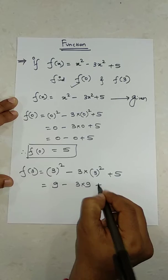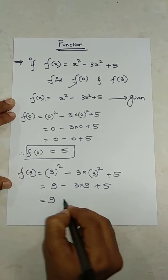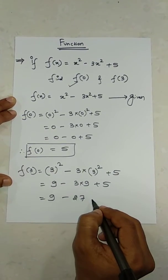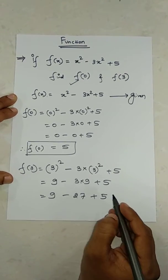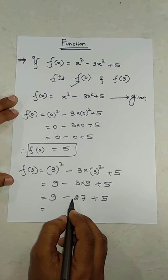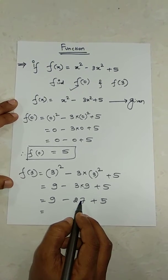9 minus 27 plus 5. In this case, 9 minus 27, which is nothing but minus 18, plus 5.